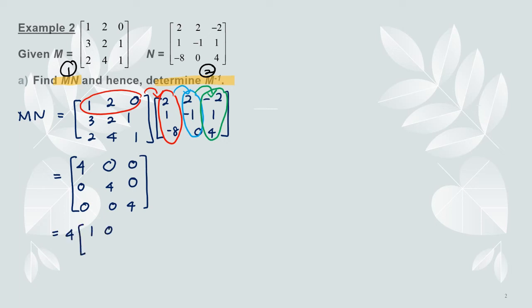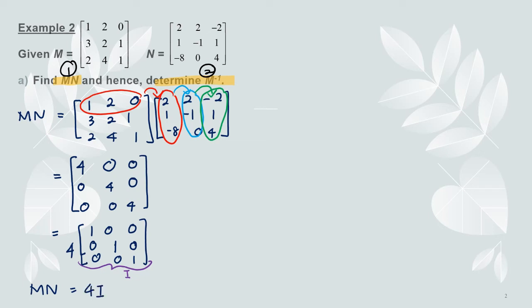Taking out the number 4, we get 1, 0, 0; 0, 1, 0; 0, 0, 1 — that is the identity matrix. We can see the pattern of these matrices: this is the identity matrix. So we can conclude that MN equals 4I. This is the answer for the first instruction: MN equals 4 times the identity matrix.